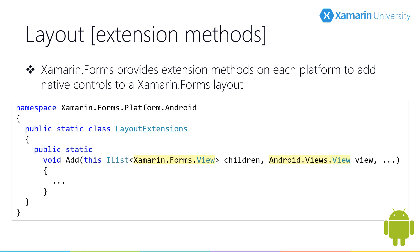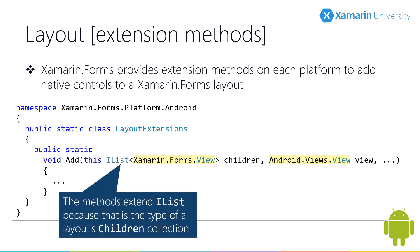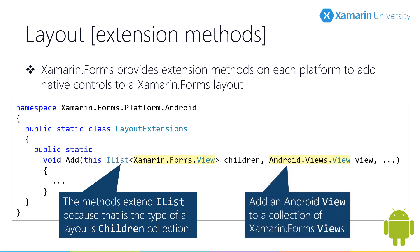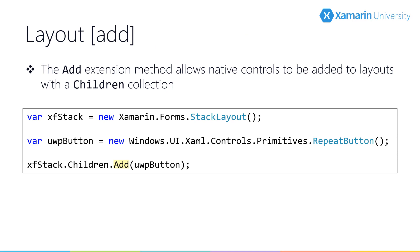Let's start with the Add extension method. Xamarin Forms layouts have a children collection of type IList. The Add extension method extends the IList collection and accepts a native base view type. This Add method is defined for each platform and accepts the correct base view type for the executing platform — for example, an Android implementation taking in an android.views.View type. Here we're adding a Windows UWP repeat button, a control unique to UWP and not defined in the Xamarin Forms API. We can instantiate the repeat button and then use the Add extension method in our UWP head project to add it to a Xamarin Forms stack layout.